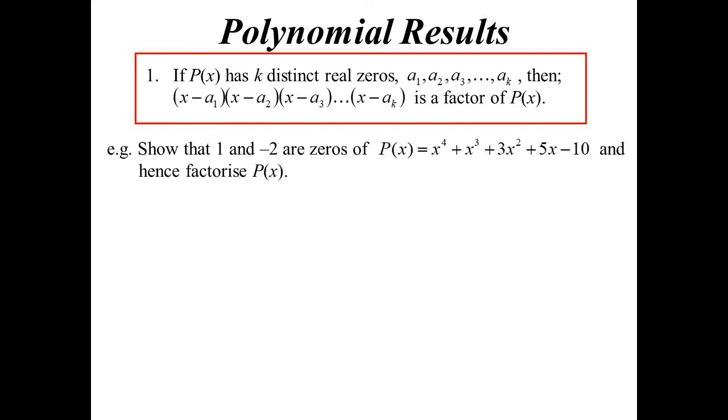So we're going to show that 1 and negative 2 are in fact zeros of this quartic, and then go and factorise the quartic altogether. So subbing in 1, yes, we get zero. Subbing in negative 2, yep, we get zero again.